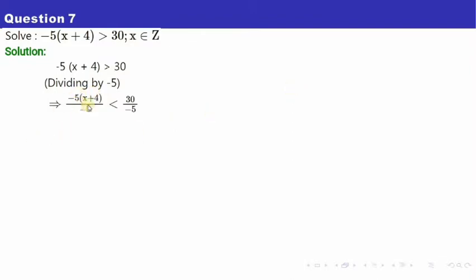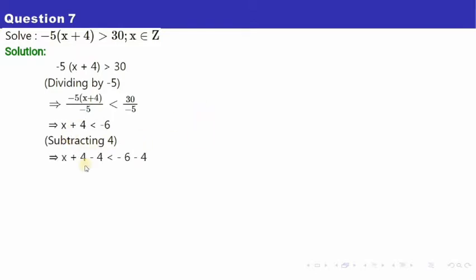The minus five and minus five get cancelled, and 30 divided by 5 gives minus six. So we have x plus four less than minus six. Next, to get rid of this four, subtract four from both sides. The fours cancel, and minus six minus four is minus ten.